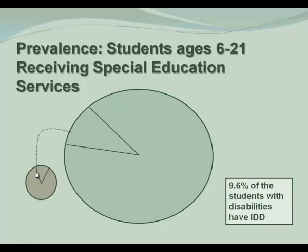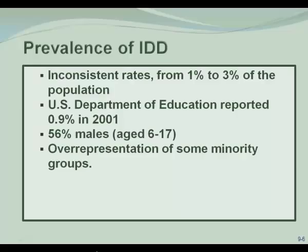Now look at the smaller circle, which represents all the students with IDD. Out of that group, 90% have mild to moderate IDD, and only about 10% have severe or profound IDD. When we look at the whole population — adults, adolescents, children, preschoolers, toddlers, and infants — the general population has between 1 and 3% IDD.